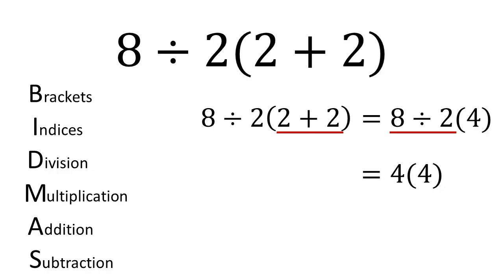and we've still got our times by 4 at the end. 4 times 4 is 16, and there is our final answer. So the value of our expression 8 divided by 2 times brackets 2 plus 2 is 16.